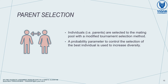In the classical tournament selection method, K individuals are selected arbitrarily from the population, and the individual with the best fitness is selected. In RGA, individuals, or parents, are selected to the mating pool with a modified tournament selection method. A probability parameter is used to control the selection of the best individual, so sometimes we select the worst individuals to increase diversity.